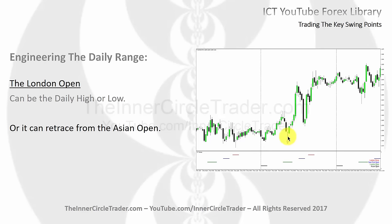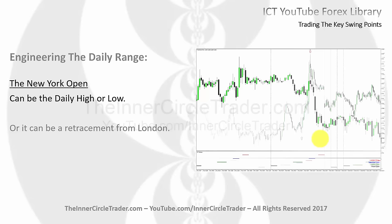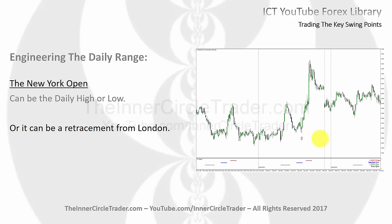If we're bullish, we're going to assume that Asia creates the low and we're retracing down into what would be an optimal trade entry — that could be a long. So the London open can be part of the move that originates from the Asian open. Now, the New York open — this too can create the high or low of the daily range. You can see an example of the market staying in a consolidation, dropping down, and we'd assume bearish, but a big news event comes out and creates a run on liquidity — a run above equal highs creating the New York open raid on liquidity that makes the high of the day.